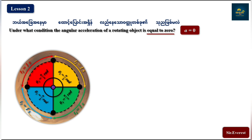Angular acceleration zero. Angular velocity constant. Rotating object with constant angular velocity. Angular acceleration zero — in this case the rotating object has constant angular velocity.